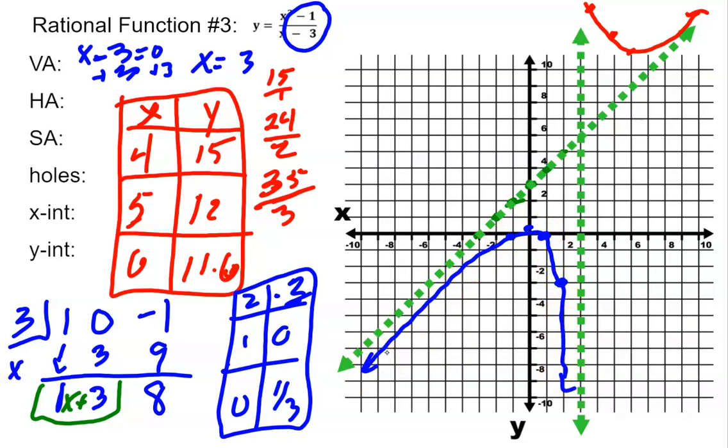That's how you can graph this rational function with a slant or oblique asymptote line.